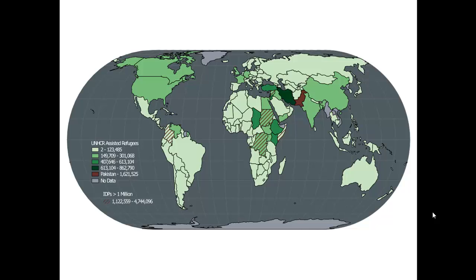After that you'll go on to make a multivariate choropleth map, showing assisted refugees and internally displaced persons greater than a million. Then in the final map, you're going to label a downtown area and work with advanced labeling techniques using QGIS.